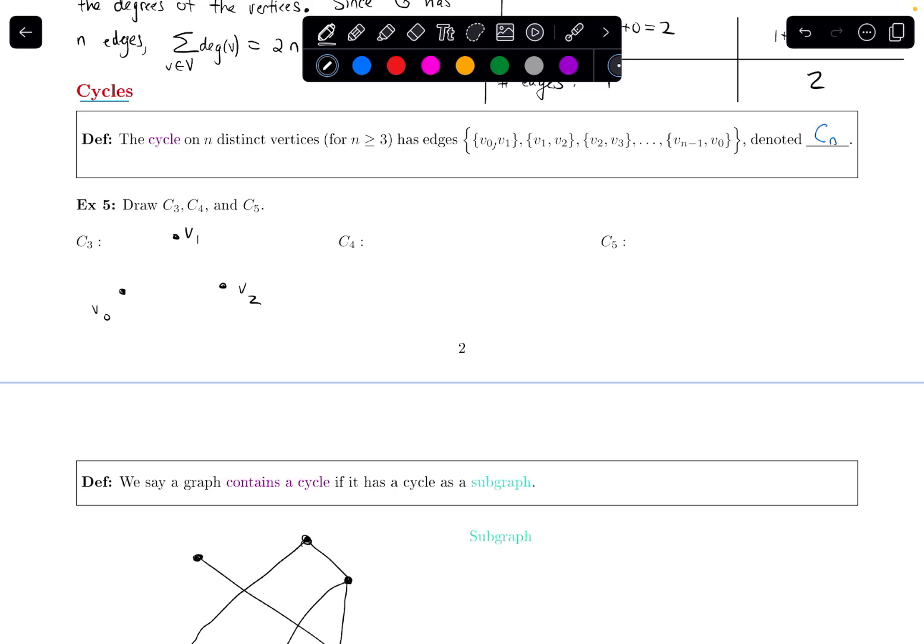It's a cycle if the first vertex is connected to the second one with an edge. That's what this first part is saying. There's an edge from V0 to V1. Then there's also got to be an edge from the second vertex to the third vertex. So there's an edge connecting V1 and V2.